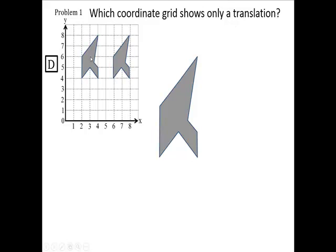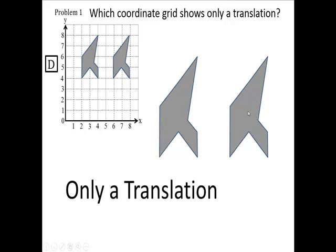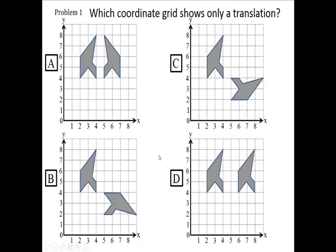And you can see this moves from here to here, facing the same way. It didn't rotate. It didn't reflect. All it did is translate. And that's all we want. So, of our four examples, we're going to pick D as our correct answer.